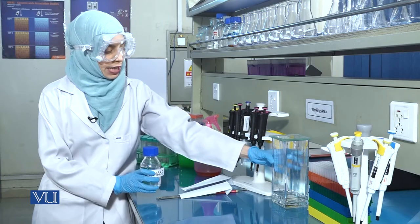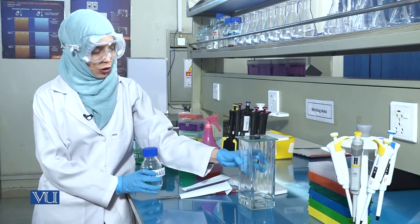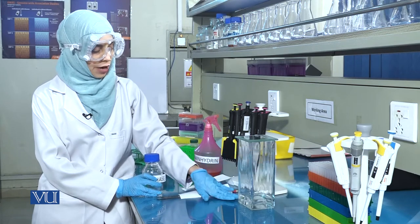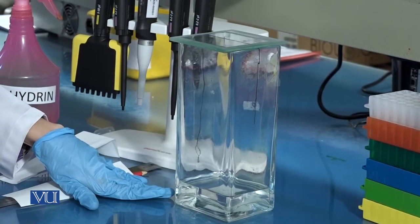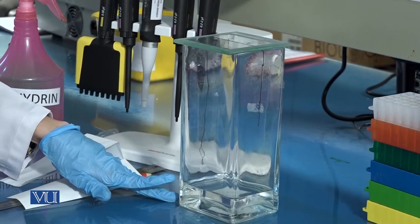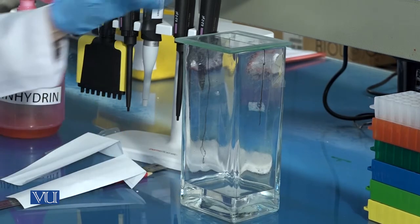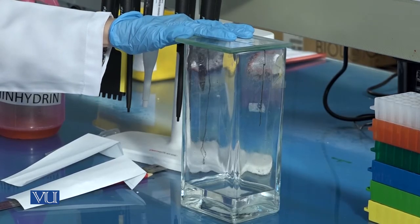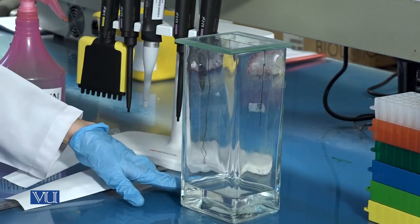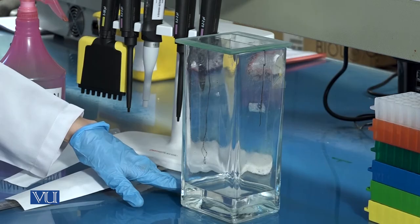Take a chromatography tank and add the solvent to it, ensuring that it covers the base of the tank, forming a layer half to one inch in thickness. Cover the tank and allow the atmosphere to get saturated with vapours of the organic solvent, or mobile phase.